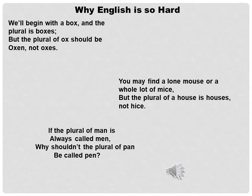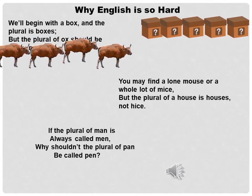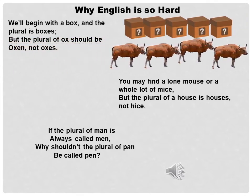Why is English so hard? We begin with a box and the plural is boxes. But the plural of ox should be oxen, not oxes. You may find a lone mouse, or a whole lot of mice. But the plural of a house is houses, not hives.